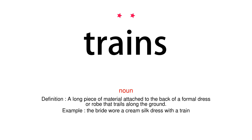Noun. Definition: A long piece of material attached to the back of a formal dress or robe that trails along the ground. Example: The bride wore a cream silk dress with a train.